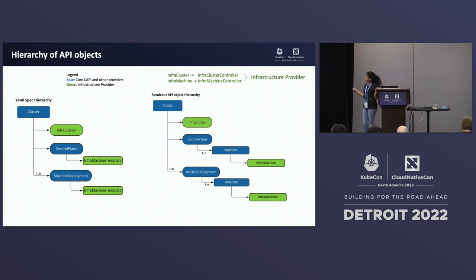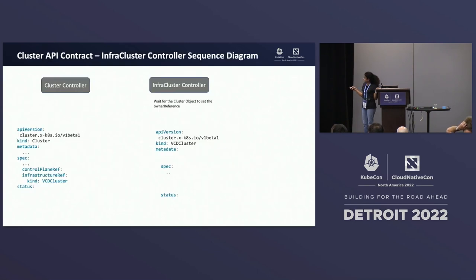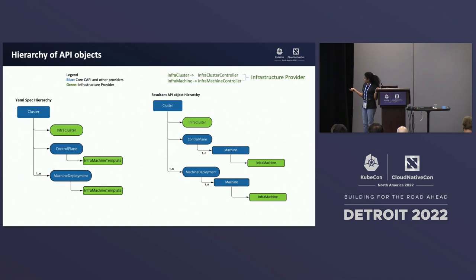All of these resources are watched by their associated controllers, which do continuous reconciliation attempts to bring current state to desired state. We have these infra cluster and infra machine objects that are created as a result, and these are supposed to be watched by the respective infra cluster and infra machine controllers. This is what we are supposed to build as part of the cluster infrastructure provider — the CRDs and their associated controllers at minimum make up the infrastructure provider.